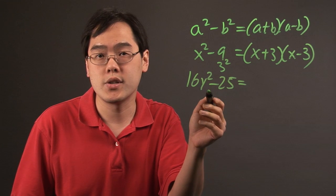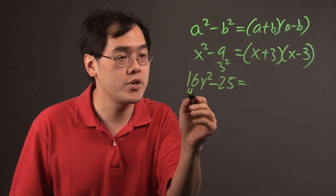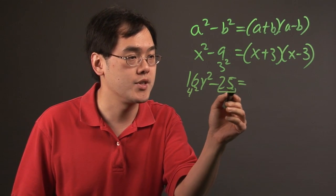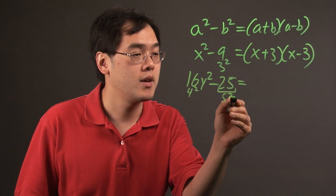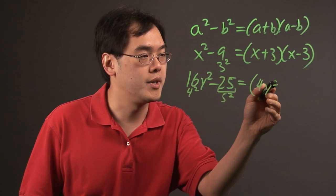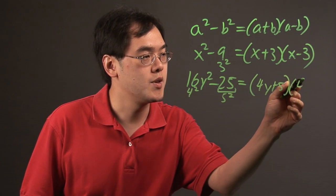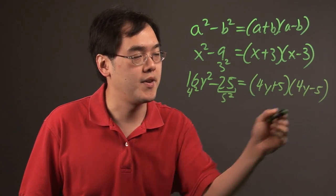y squared is a square, but 16 is considered 4 squared, and 25 is considered 5 squared. This can be thought of as 4y plus 5 times 4y minus 5.